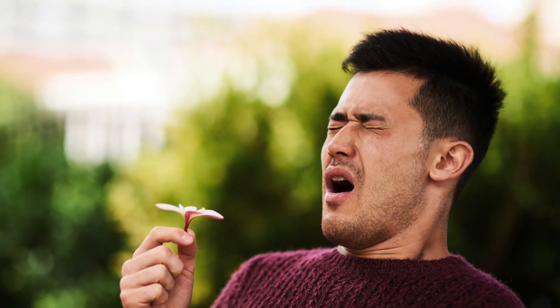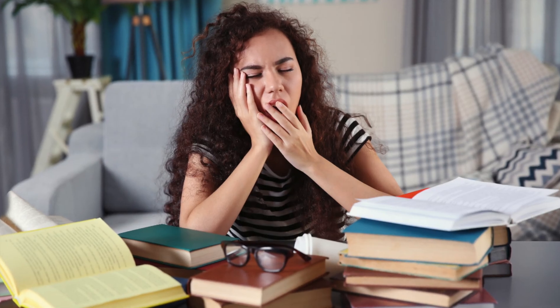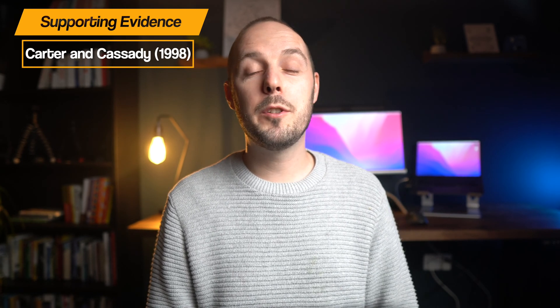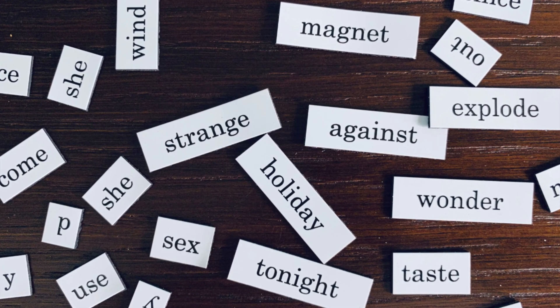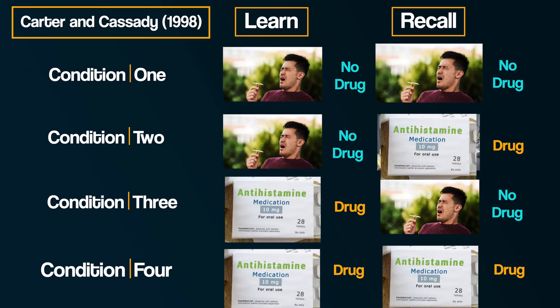What about the research evidence for state-dependent forgetting? During the summer months when the pollen count is high, one drug people often take to reduce allergy symptoms is an antihistamine. Not only does this drug help relieve allergies, but depending on the drug it can also have sedative effects — it can make you feel drowsy. Here's the research of Carter and Cassidy in 1998. They wanted to see if taking an antihistamine, which would change your internal state, would affect memory recall. Participants tried to free-recall a list of 20 words and a short passage of information using the classic four-condition setup. They found that recall was higher when participants were in the same internal state at recall and learning, and retrieval failure occurred when they were in different states at encoding and recall.